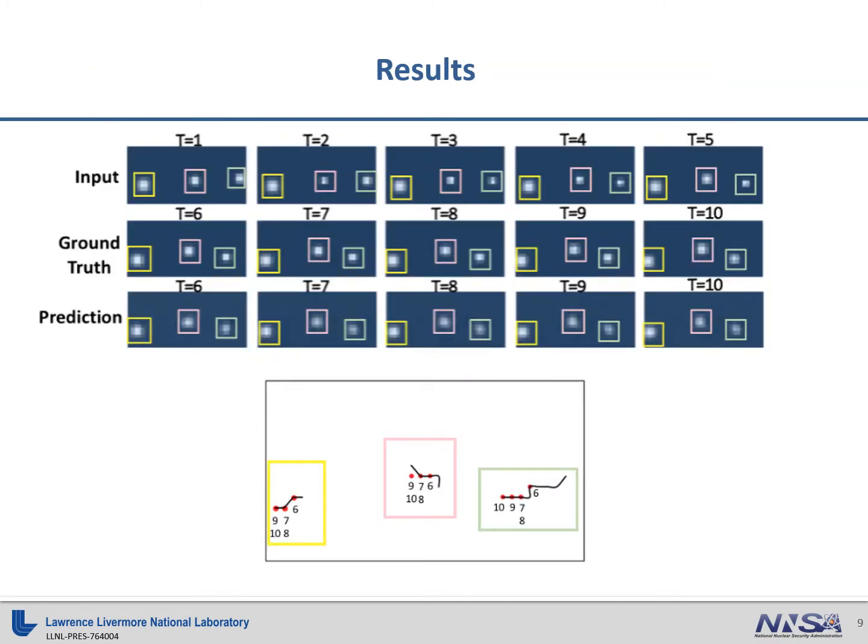This is the output from our ConvLSTM prediction model. Based on heatmap from timestep 1 to 5, we want to predict the heatmap in timestep 6 to 10. And this is the trajectory from this result. Black is the ground truth trajectory obtained from ground truth heatmap and red dots are the predicted trajectory obtained from predicted heatmap. Although there are slight deviations, we can see that there is strong agreement between ground truth and prediction.